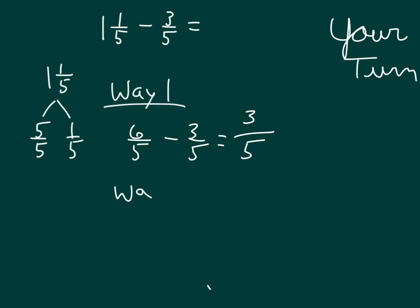For way 2, we would take the 1 whole, and then so we have 5 fifths, we subtract the 3 fifths, which gives us 2 fifths, and then we add back in the fifth, which would be 3 fifths.